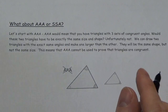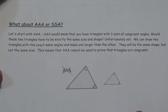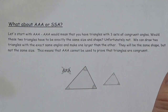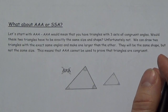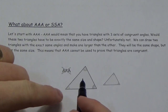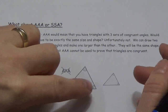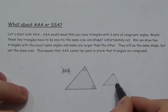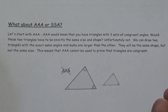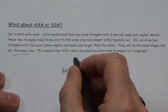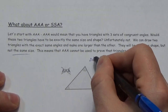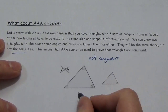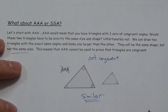Now let's look at two special situations that cause concern. First: AAA (angle-angle-angle). If two triangles have the same three angles, do they have to be exactly the same size and shape? Actually, no. If you just scale a triangle down, you get a triangle that's the same shape but a totally different size. Those two triangles are not congruent. If you think back, the word we use to describe two shapes like that is similar.